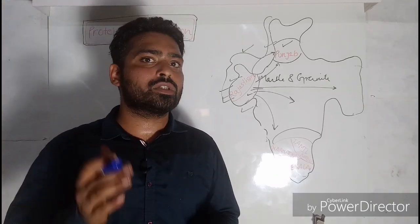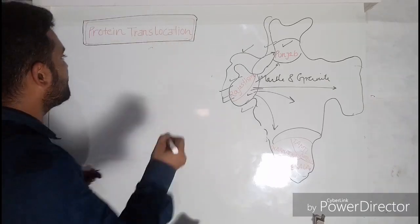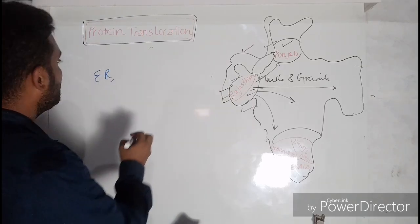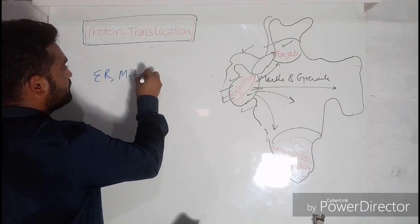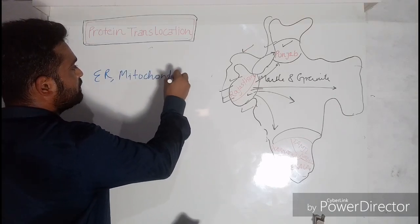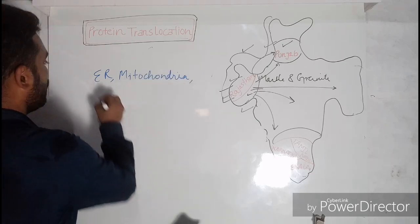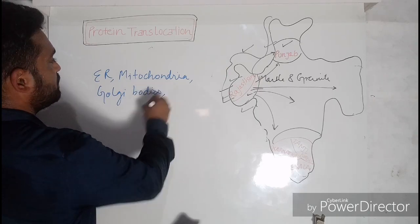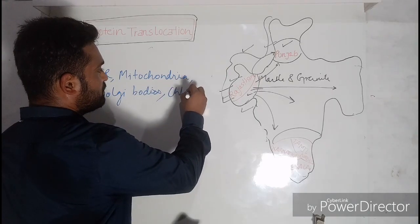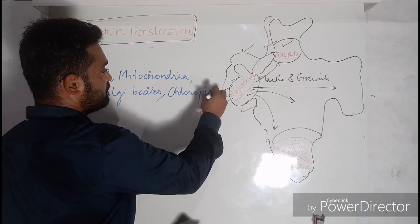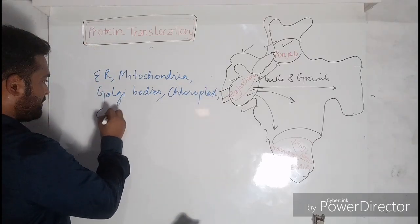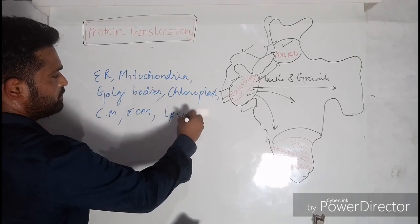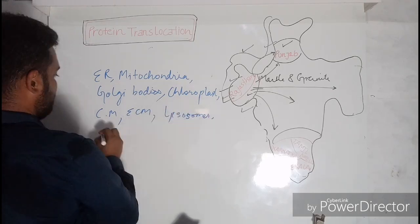Now we want to know: what are those locations? They are basically the ER itself, and then we have mitochondria, Golgi bodies, chloroplast, cell membrane, ECM, lysosomes, peroxisomes.